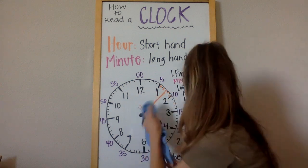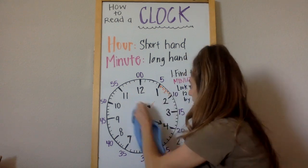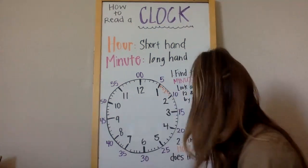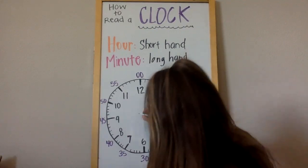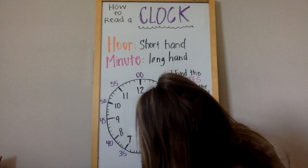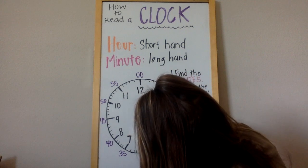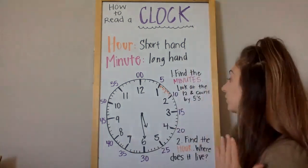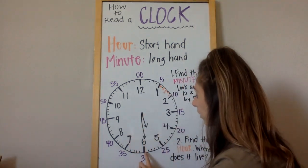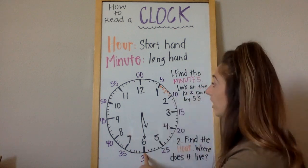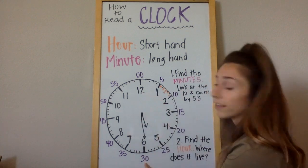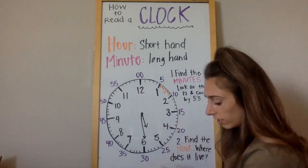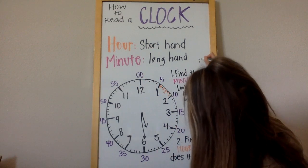So let's try another one. Step one: find the minutes — our long hand. My minutes are right on the six, but I need to go into my minute language. I start at the 12 and count by fives until I get to the six: zero, five, ten, fifteen, twenty, twenty-five, thirty. So my minutes are 30 minutes.